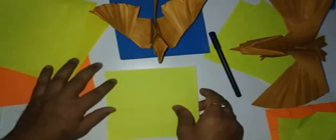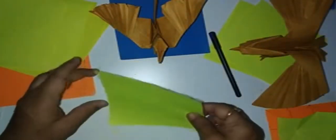We can prove Pythagoras theorem through origami. Take a square paper. Fold it into half.